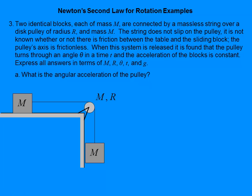The mass of the pulley is the same as the mass of the objects — that's going to help us cancel things out later. The radius of the pulley is r. When this system is released, the pulley turns through an angle θ in a time t, and therefore the acceleration of the blocks would be constant. I want all answers in terms of m, r, θ, t, and g only.